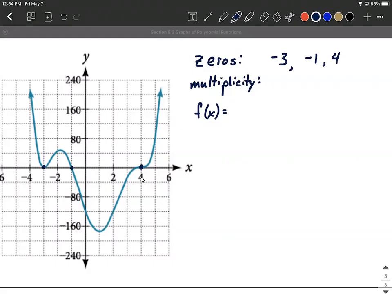So start with the x-intercepts or zeros or roots, whatever you want to call them. Next up, let's pick out their multiplicities. Remember, as you're picking out multiplicities, even multiplicities touch, odd multiplicities cross.